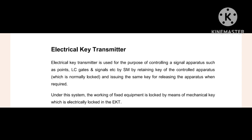This electrical key transmitter is used for operating the points. For example, if there is a problem with a point, the station master will release the electrical key transmitter from his control and hand it over to a person going to the field, where they can operate the point manually. That means the electrical operation has been suspended and mechanical operation has been retained. Similarly, LC gates and signals can also sometimes be operated by means of the electrical key transmitter. This is very important, which is why it is normally in the locked condition.